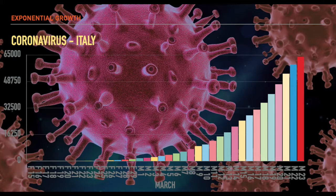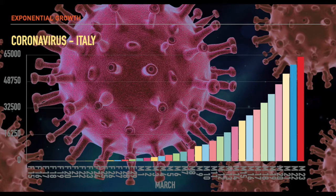This graph, as you can tell, is the perfect example of exponential growth. Here we have the data — the real data — of the coronavirus cases in Italy, February and March, day by day.